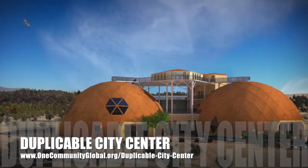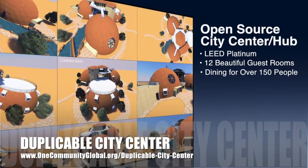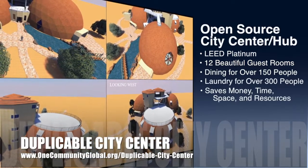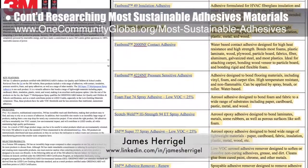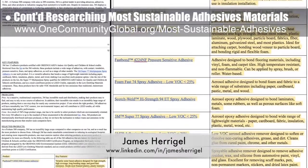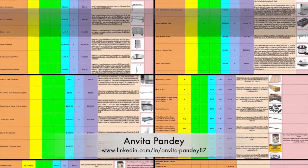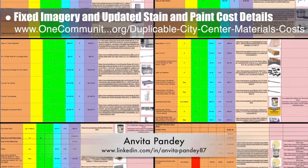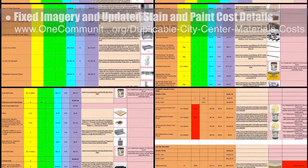One Community is also creating an open source duplicable city center designed to be LEED Platinum certified, provide 12 guest rooms, dining for over 150 people, and laundry and recreation space for over 300 people, all while saving money, time, space, and resources. James Harigel, student researcher, completed his 19th week researching sustainable materials for the Most Sustainable Adhesives page, focusing on specific products for the 3M product section. Veda Kumari Pandey, civil engineer, continued helping with the duplicable city center costs — this week fixing all imagery on the kitchen spreadsheet and updating paint and stain details to match James's research identifying the most sustainable options.